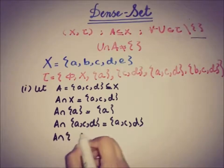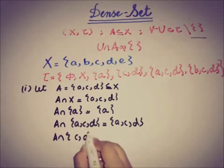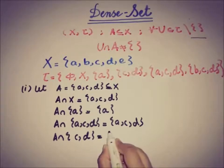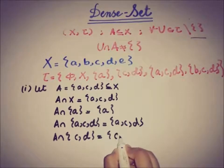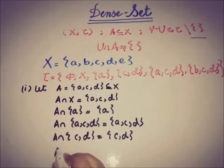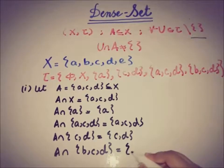Then A intersection with {c,d} gives us {c,d}, and finally A intersection with {b,c,d} gives us {c,d}.